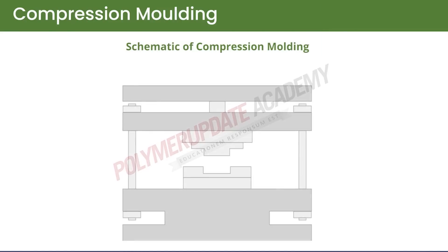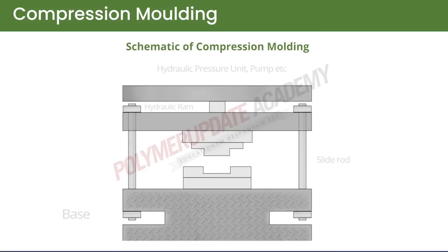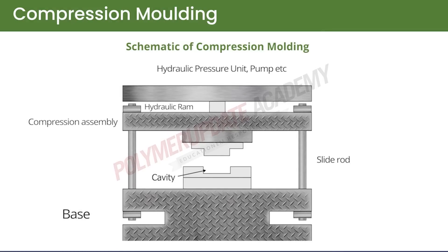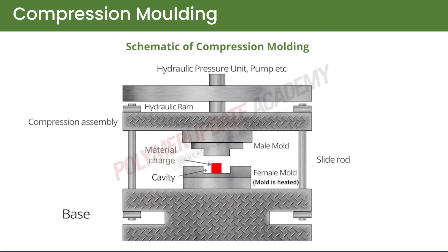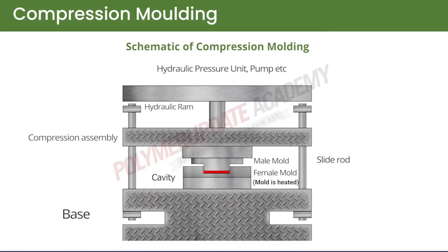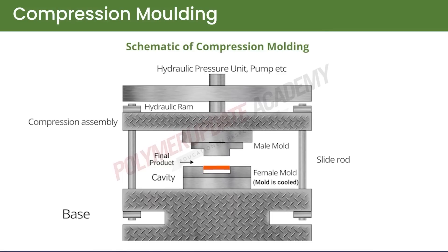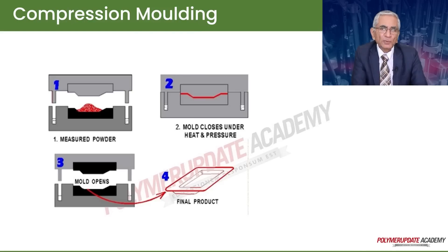The compression molding process is described here in a schematic way. There is a strong and sturdy base on which the mold cavity, also called the female mold, is fitted. The material is charged into the cavity, the mold is heated, and the hot and soft material is pressed with sufficient force so that the cavity is completely filled. The mold is then cooled and pressure is maintained even while the material cools. After cooling, the male mold is lifted upwards and the product is ejected, so that the press is ready for the next shot.